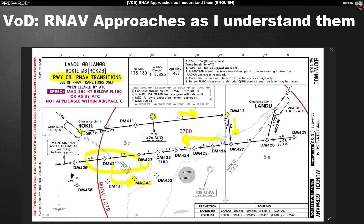So if you expect a very precise real-world understanding of all these things, this video might not be for you. I'm going to thin things down to what I think I need to understand in order to deal with it. Basically, when you read RNAV — or something like RNP, which stands for Area Navigation Procedure — you're talking about GPS-based navigation.